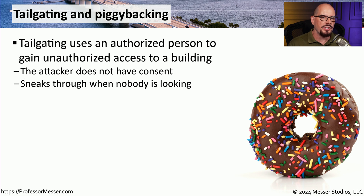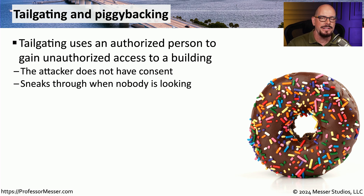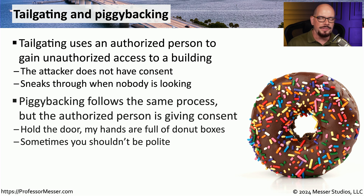A lot of the security for a physical location happens at the front door — if you can get through that initial door, a lot more information will be available to you, and attackers know this. They've found ways to get into buildings without any type of authorization. One technique is tailgating: using someone who's authorized to give you a way into the building. When somebody badges in, unlocks the door, walks through, and leaves the door to close on its own, you can walk up and stop the door from locking and simply walk in — that's a perfect example of tailgating.